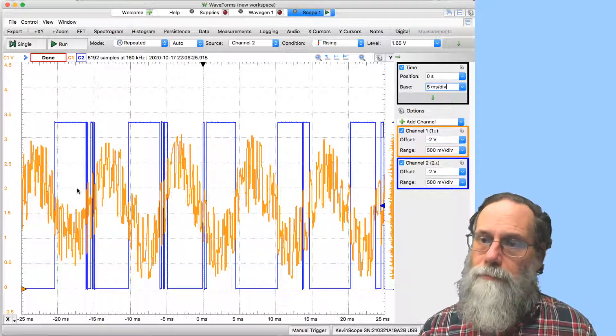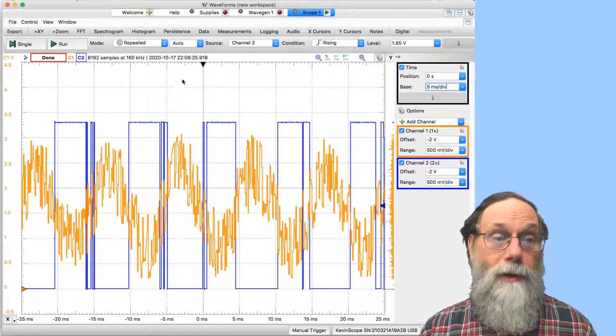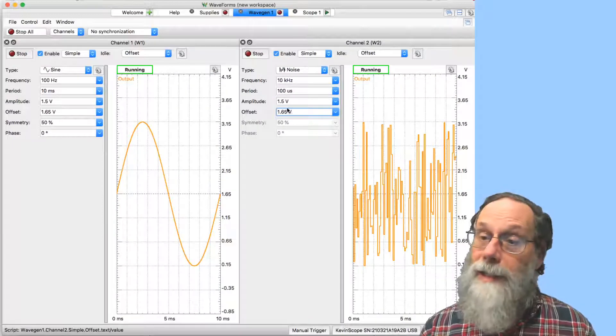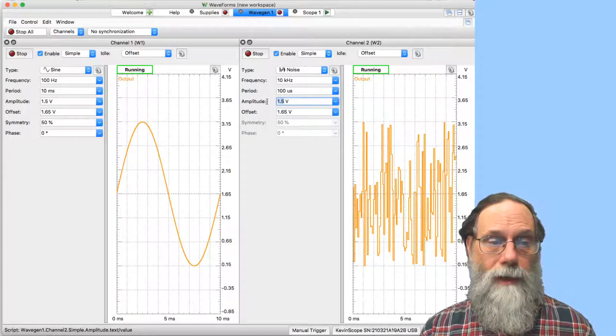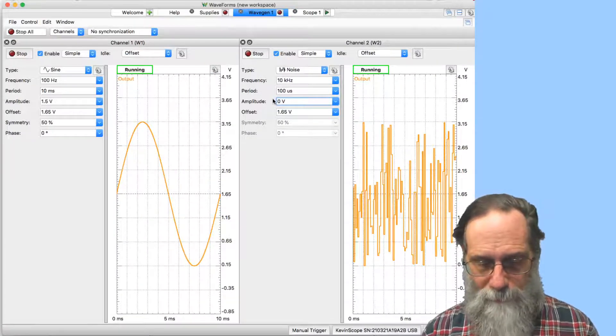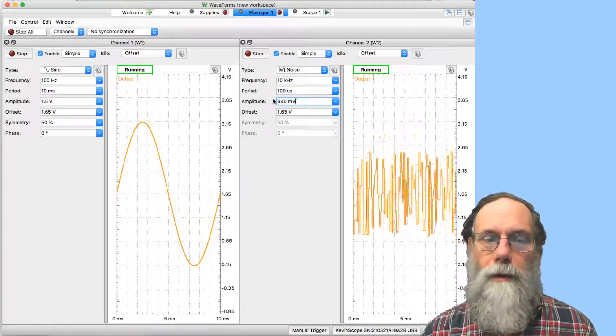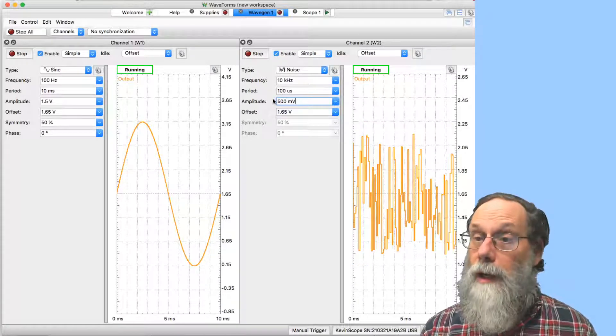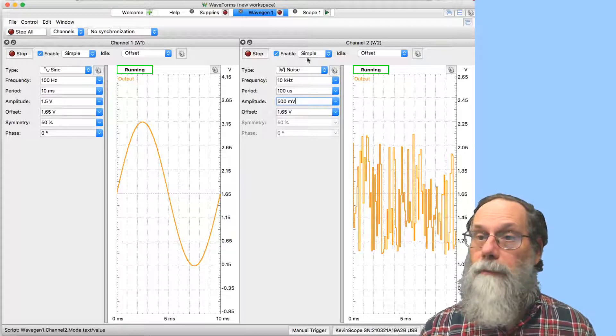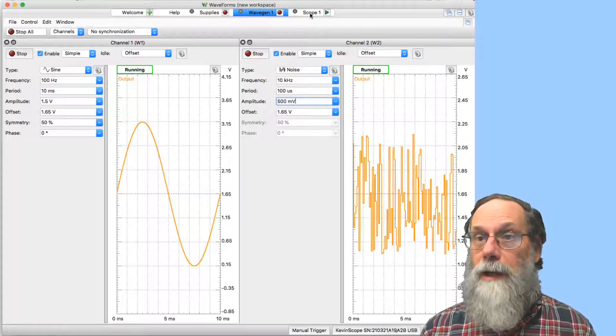So let's take a look at what happens if we reduce the noise. Try to pick something that's less than the hysteresis voltage. And I think half a volt will be enough reduction in the noise to make things clean. Let's try that and see.